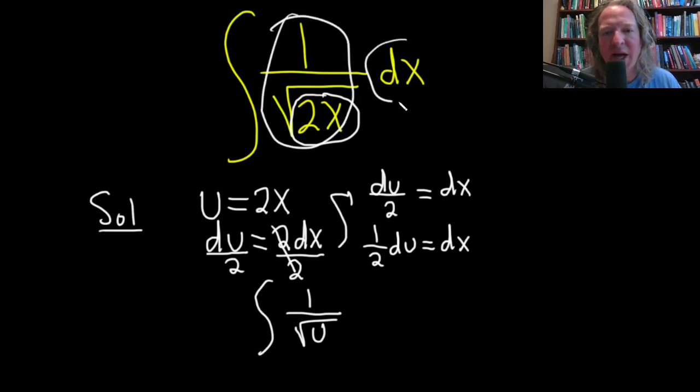I'm going to pull out that 1 half and put the du over here like that. So dx is 1 half du, and just put the u there.